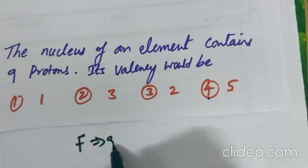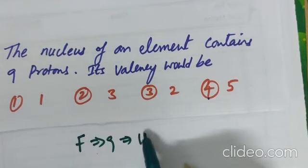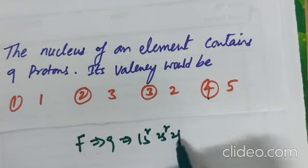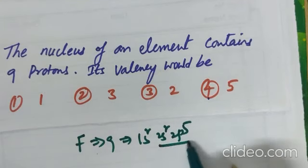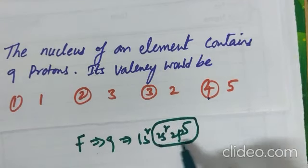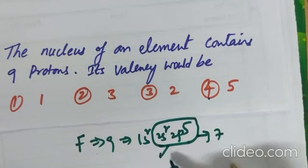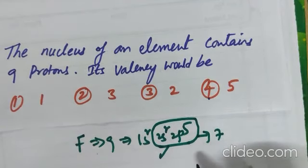Fluorine atomic number 9. Configuration 1s2, 2s2, 2p5. This is outermost energy, contains 7 electrons, present in second period. D orbitals unavailable.